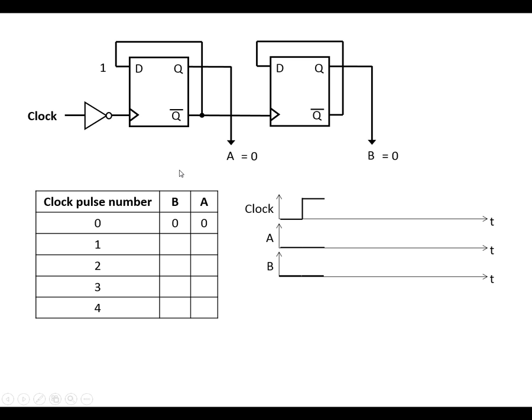So we're going to get the clock pulses coming in. So it's when the clock input here falls, all we get is D copied to Q. So A is going to go high. And then Q bar is going to go low. Because that's gone from high to low, nothing's going to change on this flip flop. So B stays the same.